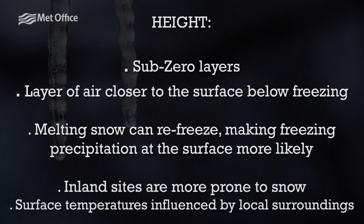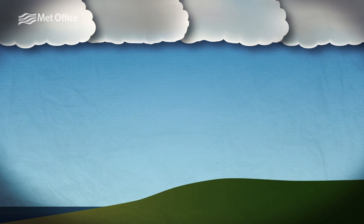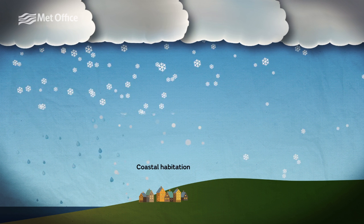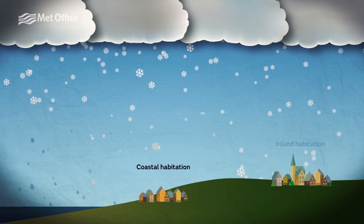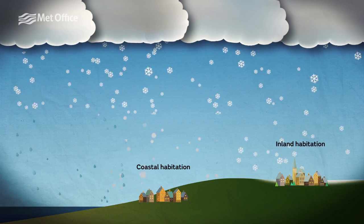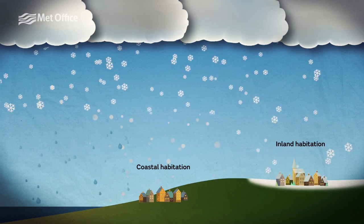There are other factors to consider as well. An inland site is more prone to snow than a coastal one due to temperatures at the surface being influenced by the local surroundings. In winter, land temperatures tend to be much cooler than sea temperatures. This makes it easier for snow to settle inland than near the coast, as the freezing level is likely to be close to or at the surface inland, whereas it can be kept a little higher near the coast by the warmer sea.